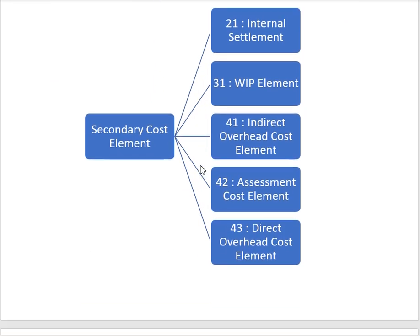Secondary cost element categories are divided into five types. Category 21 is for internal settlement, used to settle cost from one cost object to another — for example, settling internal order cost to a cost center. Category 31 is used for settlement and calculation of work in progress. Category 41 is used for indirect overhead cost elements.